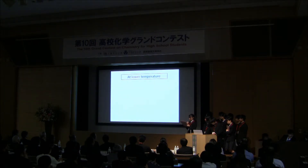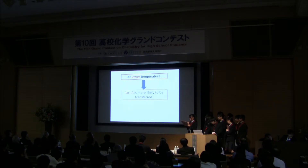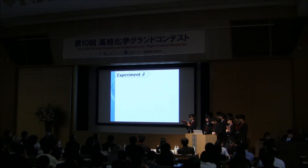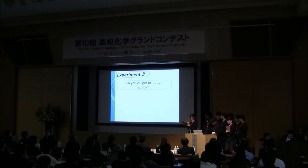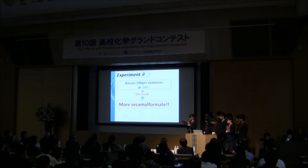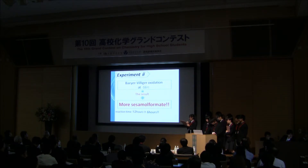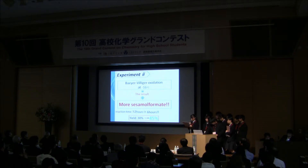Therefore, we expected that at lower temperature, part A is more likely to be transferred, and more sesamol formate could be obtained. So we let the reaction occur in a minus 16 degrees Celsius freezer. We analyzed the compounds obtained with TLC and found that, as we had inferred, at lower temperature more sesamol formate was produced. We reviewed the experimental conditions and managed to shorten the reaction time by half — from 12 hours to 6 hours — and increased yield to 45%, an increase of 15%. We are still working on further improvement.